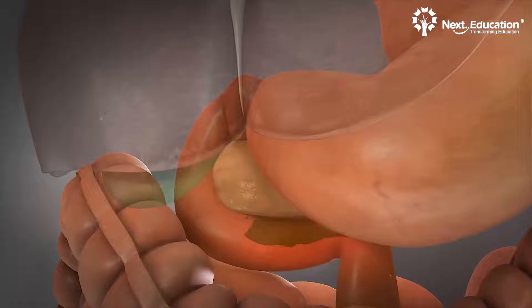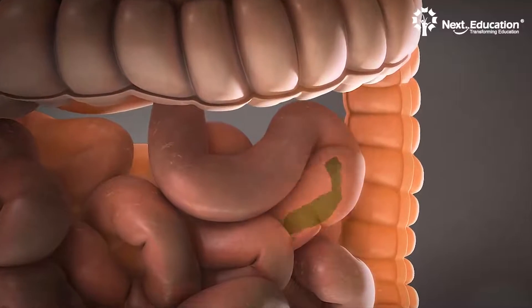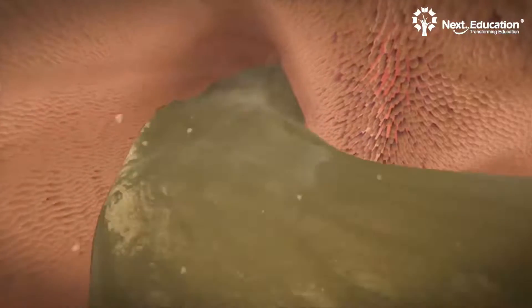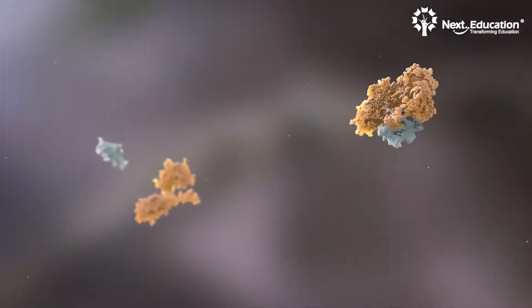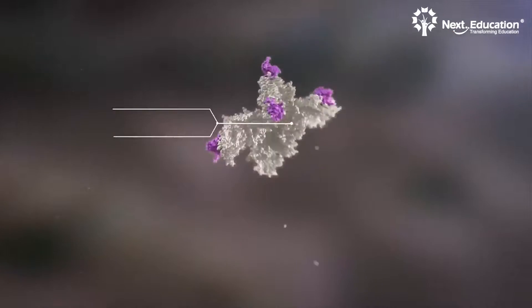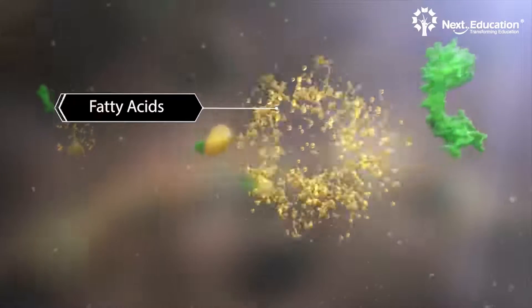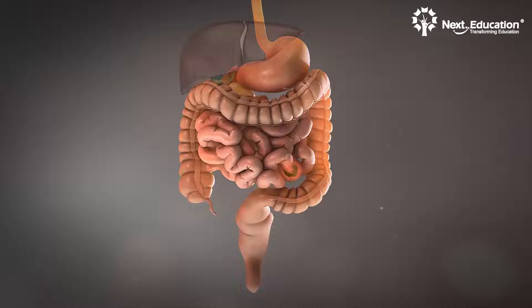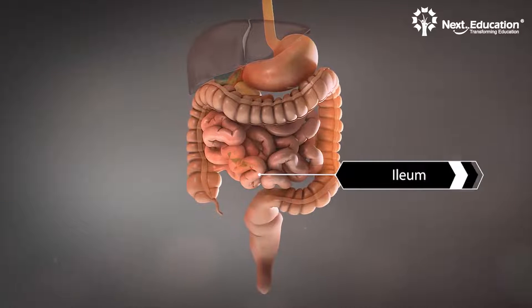Moving further from the duodenum, the chyme reaches the jejunum in the small intestine, where the intestinal enzymes complete the digestion of proteins into amino acids, carbohydrates into glucose, and fats into fatty acids and glycerol. Eventually, the chyme enters the last part of the small intestine, the ileum, and gets digested completely. It is now called chyle.